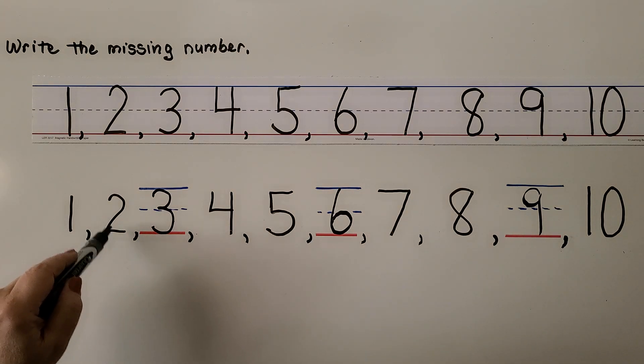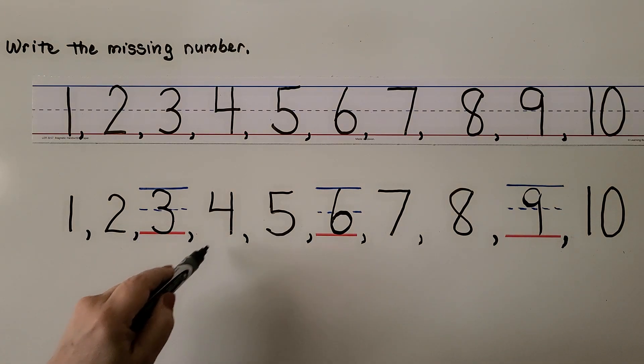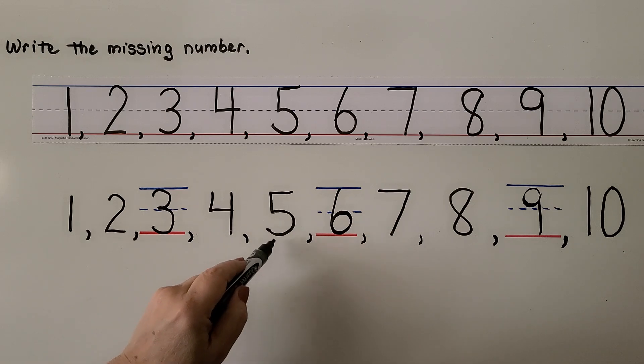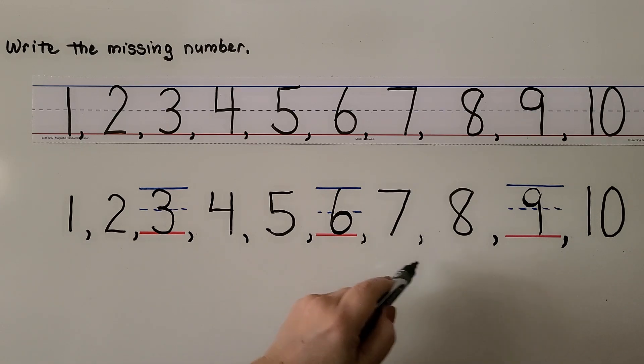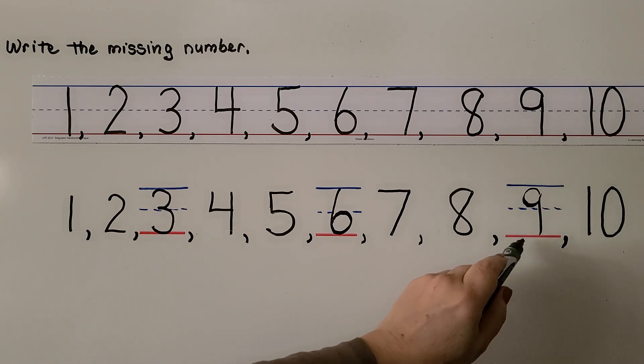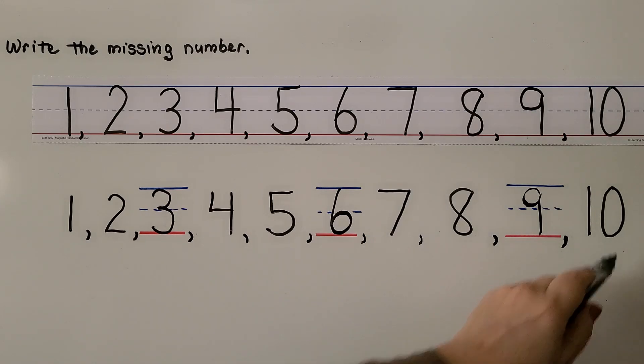We have 1, 2, 3, 4, 5, 6, 7, 8, 9, 10 — all the numbers are now in counting order.